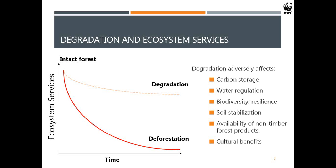This graph shows how ecosystem services change with deforestation and degradation. Deforestation has a more significant impact on delivery of ecosystem services, while degradation causes a decrease but is less extreme. Degradation is known to affect carbon storage, water regulation, biodiversity and resilience of forest ecosystems, soil-related factors, and livelihoods such as non-timber forest products and cultural benefits.